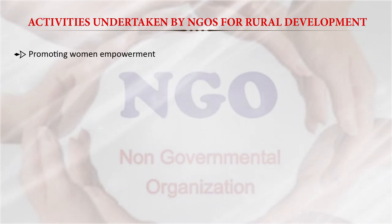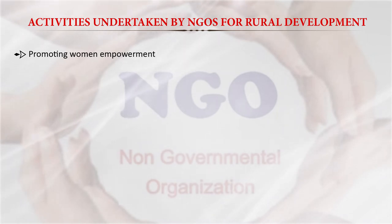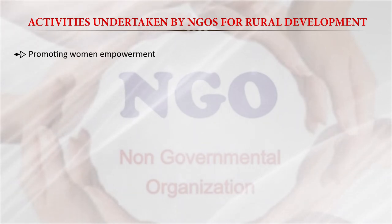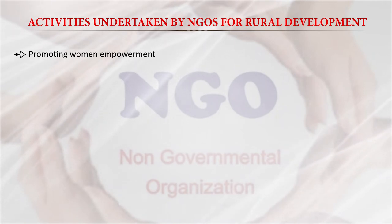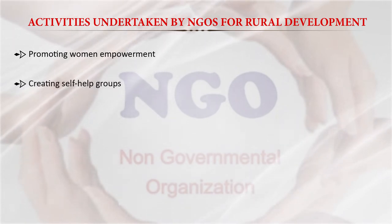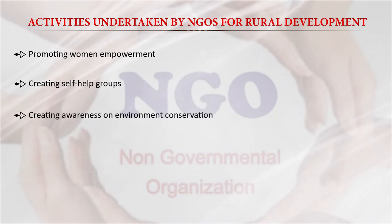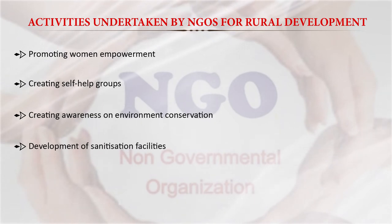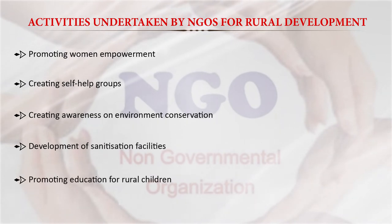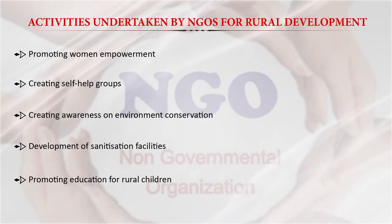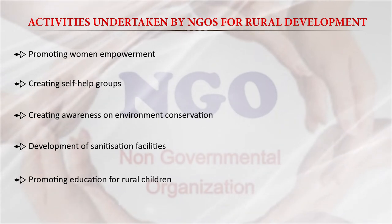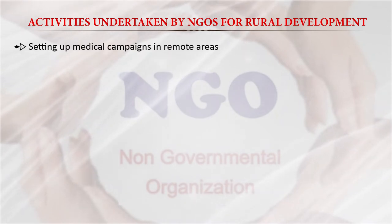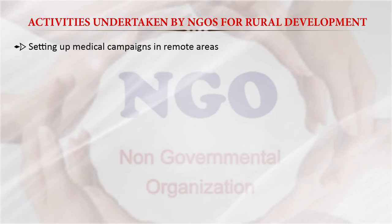The first major activity is promoting women's empowerment, which has been a very prominent social issue in India. NGOs have been playing a great role, especially in rural areas, by creating self-help groups, raising awareness about environment conservation, developing sanitation facilities, and promoting education for rural children by building schools. Though every activity depends on funds, they are happening and helping the rural masses.